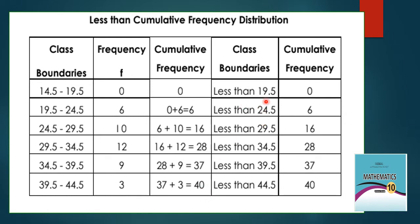Less than cumulative frequency: less than 19.5 there are 0 observations, less than 24.5 there are 6, less than 29.5 there are 16, less than 34.5 there are 28, less than 39.5 there are 37, and less than 44.5 there are 40 observations.